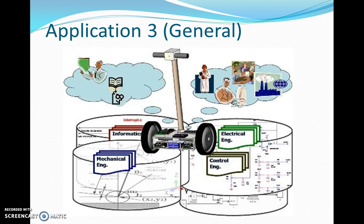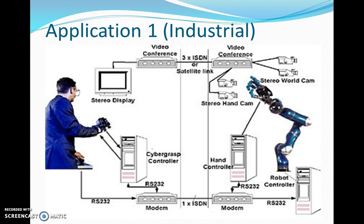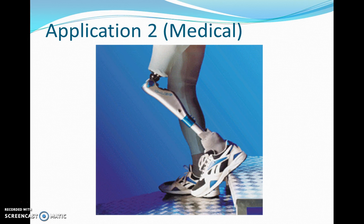So by using these three applications, the whole flow is: in the industry we can control the robot by sitting at a very remote place where we are not able to reach and can control it from a remote area. The second application is very important and will be helpful for people who met with an accident and lost their legs or hands — the arms can be replaced by prosthetic legs or prosthetic hands. The material used should be very strong, as good as the human body.